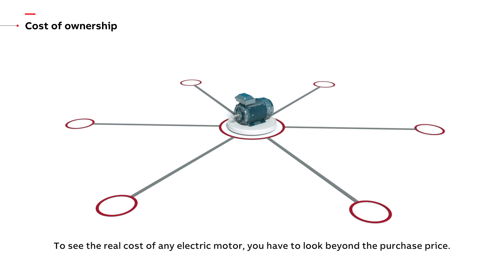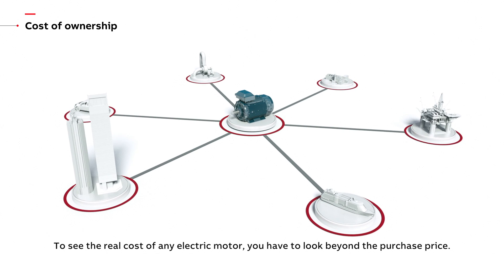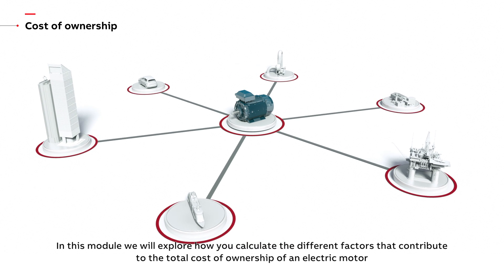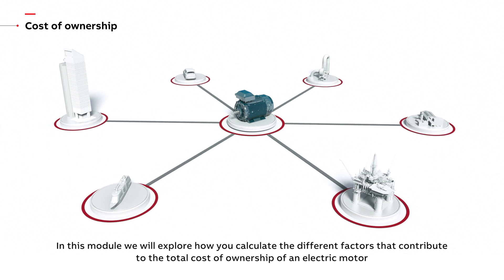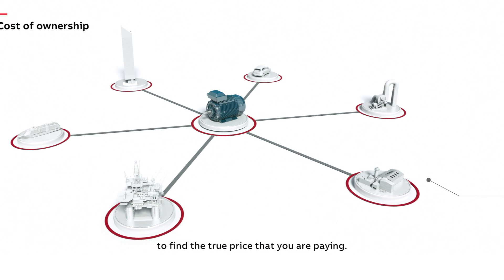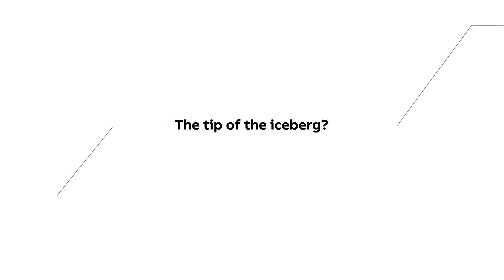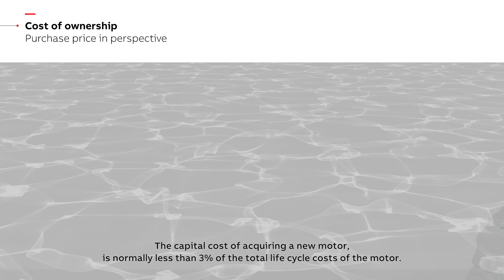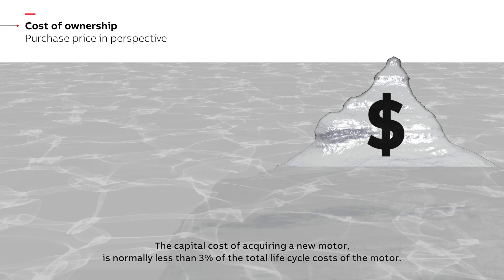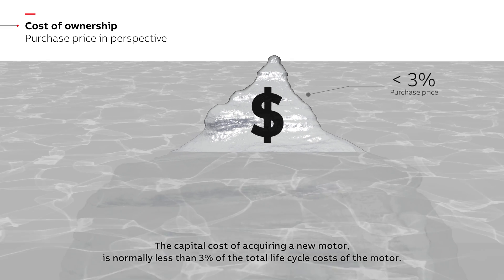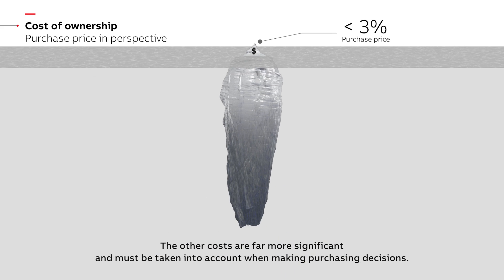To see the real cost of any electric motor you have to look beyond the purchase price. In this module we will explore how you calculate the different factors that contribute to the total cost of ownership of an electric motor to find the true price that you are paying. The capital cost of acquiring a new motor is normally less than three percent of the total life cycle costs of the motor. The other costs are far more significant and must be taken into account when making purchasing decisions.